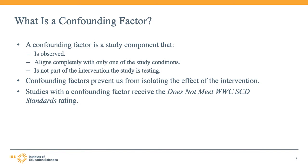The WWC is concerned about confounding factors because they prevent us from isolating the effect of an intervention. Confounding factors make it impossible to know whether the intervention alone is responsible for the observed effect or the confounding factor is responsible for some or all of the effect. Because of this challenge, any study with a confounding factor will receive a rating of 'does not meet WWC SCD standards.'